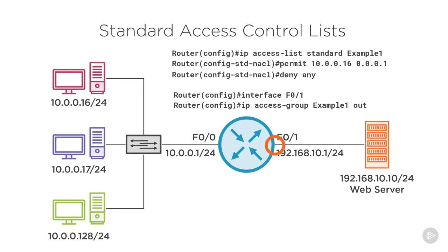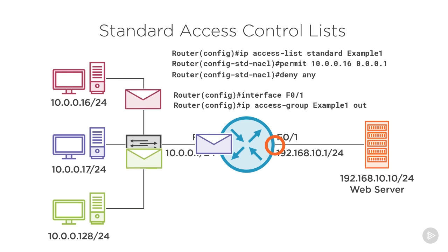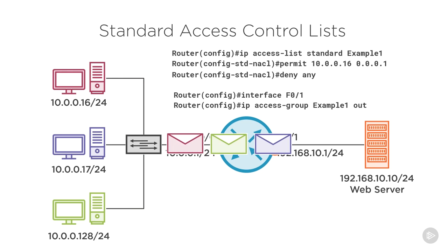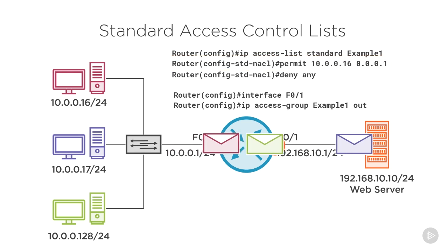All three devices send a message to the web server — we can only examine the source IP address. Assume all three open a browser and navigate to 192.168.10.10. Each sends its SYN message to the router. When the purple message arrives from 10.0.0.17, we compare it to the access control list. Checking the first line, the source address 10.0.0.17 falls within the permitted range, so we permit and forward that traffic to the web server.